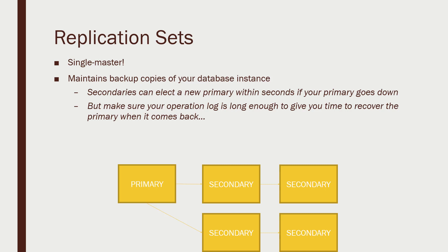At a higher level, if the primary goes down, a new secondary can be elected and take its place within seconds — so it all happens pretty quickly. You're not talking about massive amounts of downtime. But you do need to make sure you get that primary back up online pretty quickly, because if your operation log runs out of space during the time it's been down, recovering that primary is going to get a whole lot more difficult. And it's worth stressing that replica sets are just about having a single monolithic MongoDB server with its data replicated to backup servers — we're talking about durability, not big data yet.